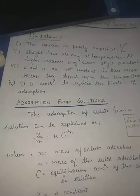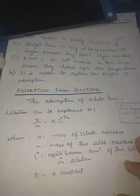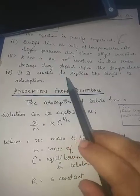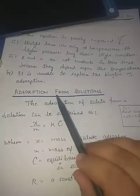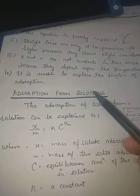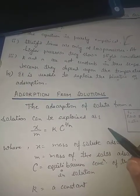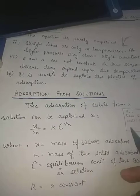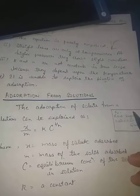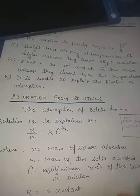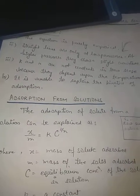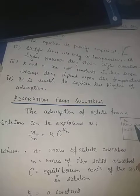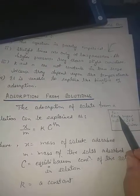Now, adsorption from solution: not only gases but solids can also get adsorbed from solution. For example, when an aqueous solution of raw sugar was passed through animal charcoal, the colored material present in the raw sugar got adsorbed on the surface of the charcoal — meaning the colored component of the liquid was getting adsorbed on the charcoal.